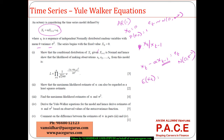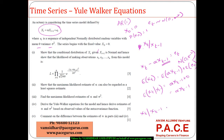Given xt minus 1, the expected value of xt is alpha times xt minus 1 plus the expected value of ET, which equals alpha times xt minus 1. This means xt given xt minus 1 follows a normal distribution with mean alpha times xt minus 1 and variance sigma squared — the conditional distribution of xt given xt minus 1 is normal.